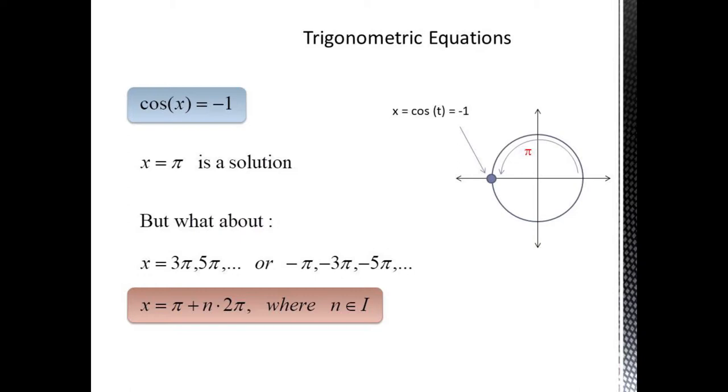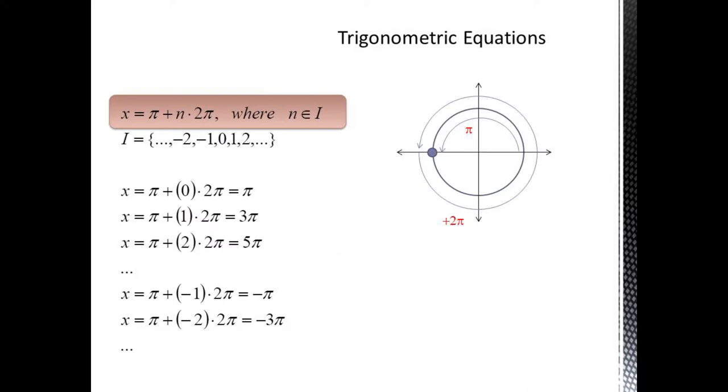minus pi, minus 3 pi, or any additional multiple of a complete wrap. These angles are all congruent to pi. We write this collection of answers in the form shown here. That is x equals pi plus n times 2 pi, where n is assumed to be an integer value.